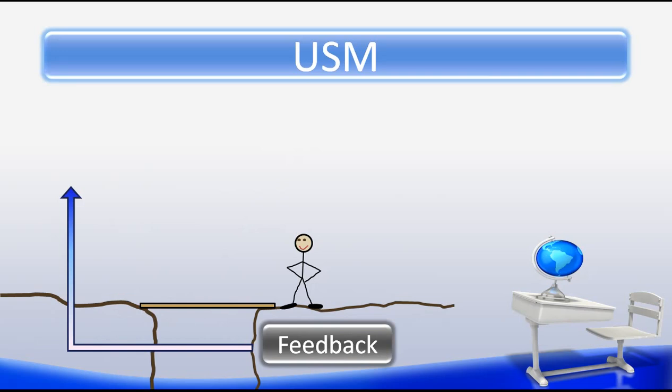The final step in the USM is feedback. We obtain feedback throughout the entire system. However, most of the feedback occurs in the processing and the output stages. We find out if we need to go back to the drawing board and come up with a new solution to our stated problem, or just make revisions to our solution, or if our solution worked out great for us.